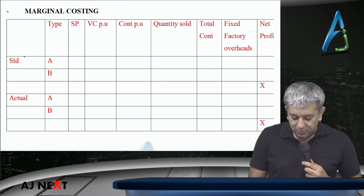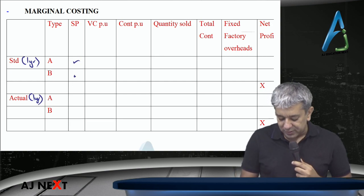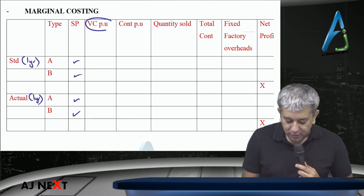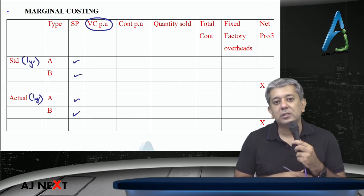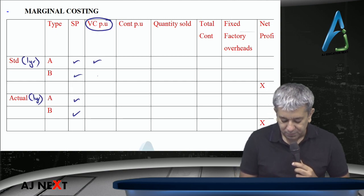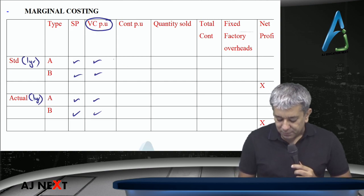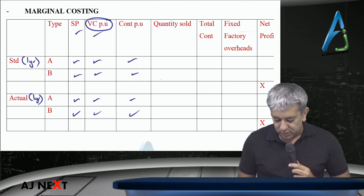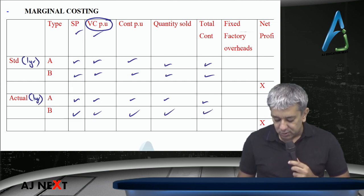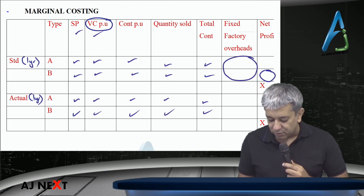Under marginal costing, if standard profit is for one year, then actual profit must also be for one year. Suppose there are two products — what the selling price should have been, what it became. The most important change: previously cost per unit was here, but now what comes here is variable cost only. Whatever changes there are will continue from here. Selling price minus variable cost gives contribution. Multiply by quantity to get total contribution, then subtract fixed factory overheads to get profit.